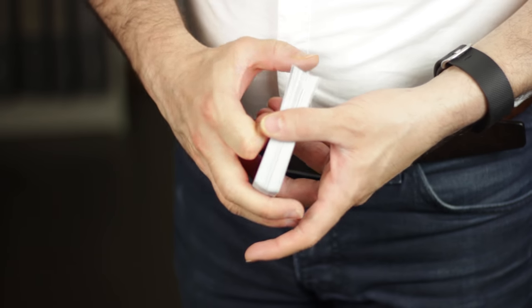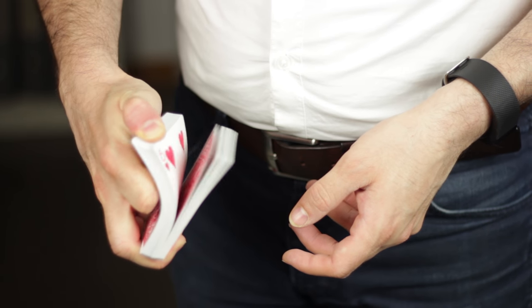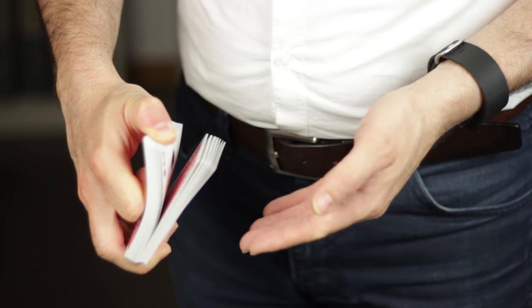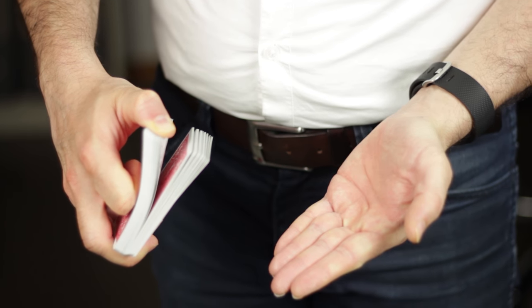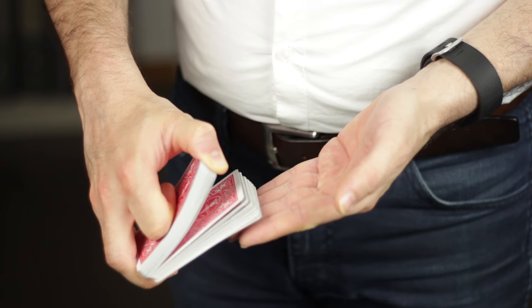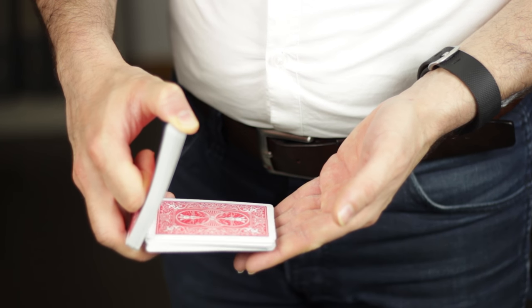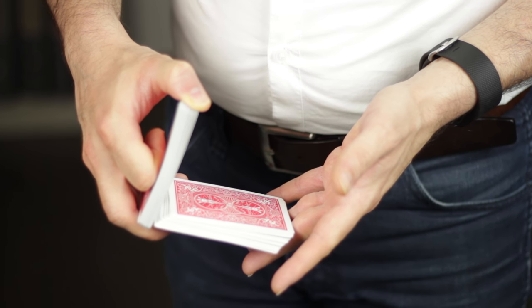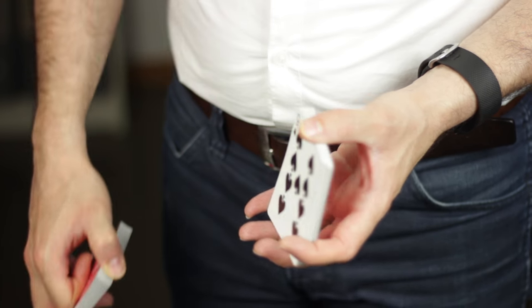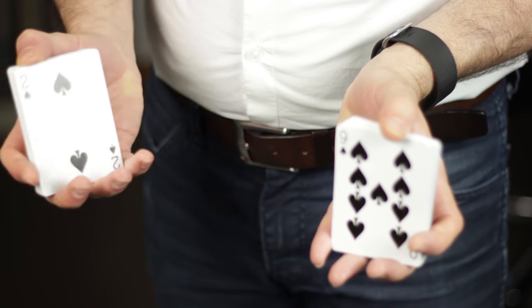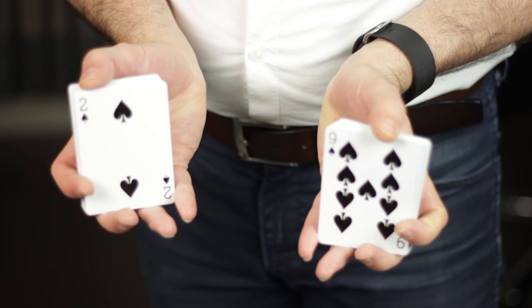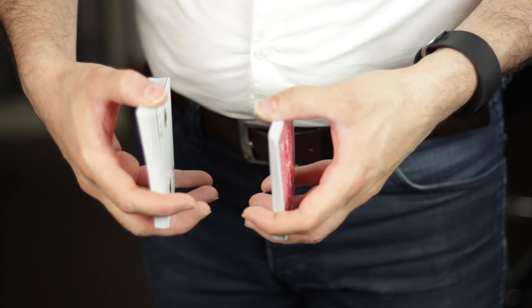So now step two. You take the cards, riffle until half of the deck and hold your hand like this. Then you just swap over the cards while holding the thumb. Just like that. And you are really mirroring the right hand.